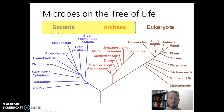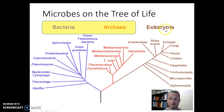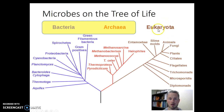So microbes include bacteria, which are prokaryotic — no nucleus. They include archaea, which are also prokaryotic — no nucleus. And then we have two kinds of eukaryotes: protists, which do have a nucleus, and some fungi that are microbial, which are also eukaryotes. So let's think about these groups one at a time, starting with the bacteria.